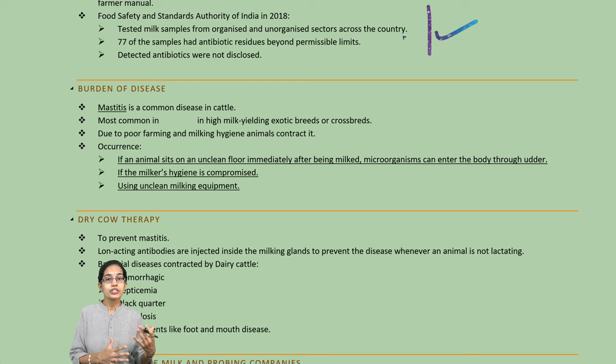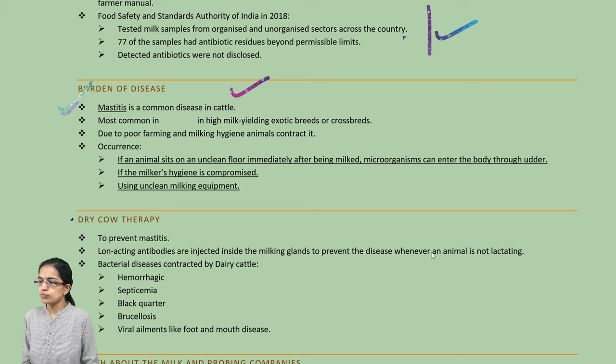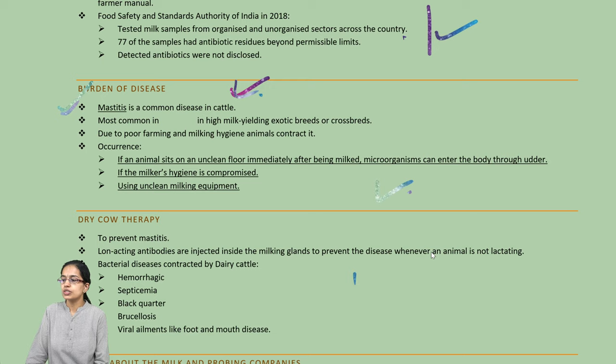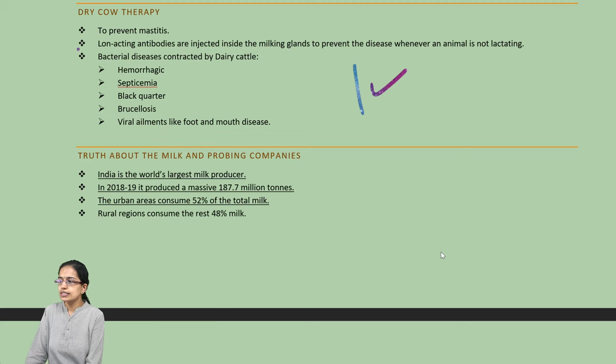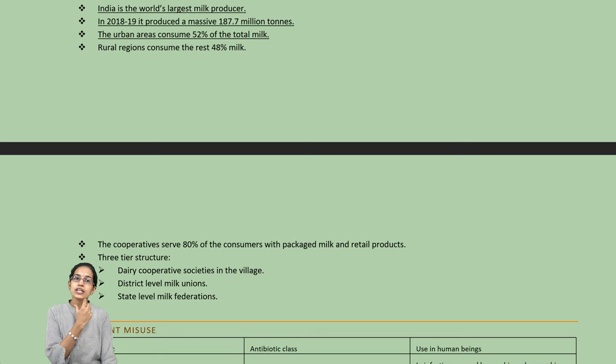Mastitis is a common disease seen mostly in cattle, and the best way to address it is to clean the floor after the cow is milked, where hygiene maintenance is very important. Dry cow therapy is one of the major ways to prevent various diseases. India is one of the largest milk producers; nearly 52% of milk is consumed in urban areas and 80% comes through cooperatives.